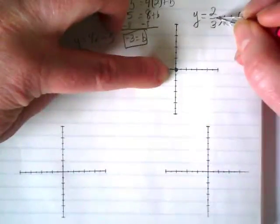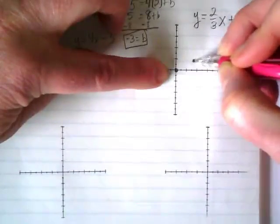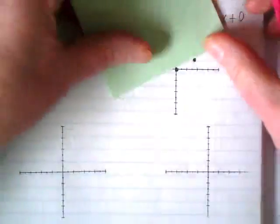And then we're going to do rise over run, 2 over 3. 1, 2. 1, 2, 3. I really only need 2 points to graph the line.